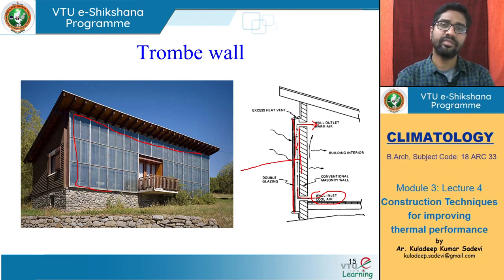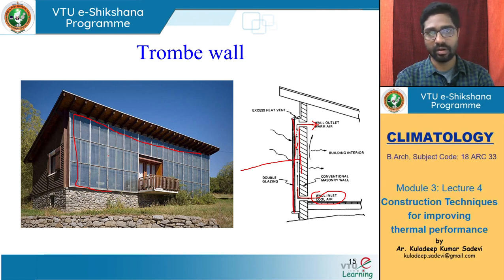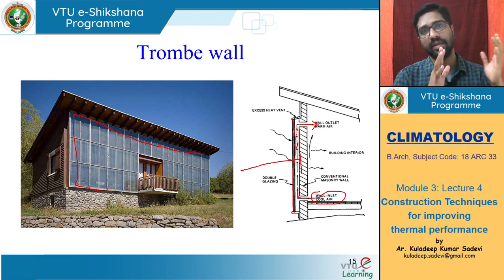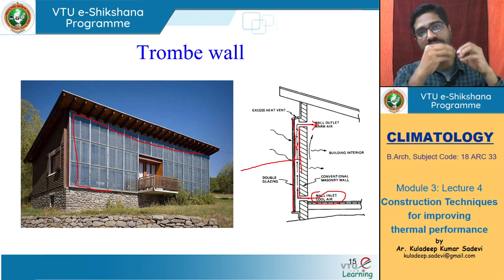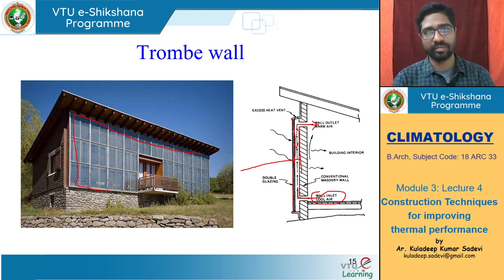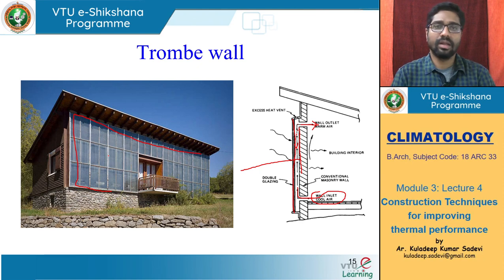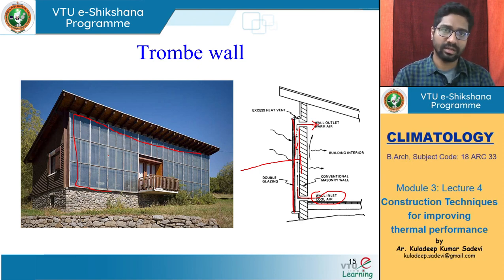This is the concept of the Trombe wall, being explored even for warm, humid, and hot and dry climatic conditions, where we are just trapping the heat so it is taken out and used for some other purpose — not to allow it into the room — because in hot climates, indoor temperatures are already much higher.